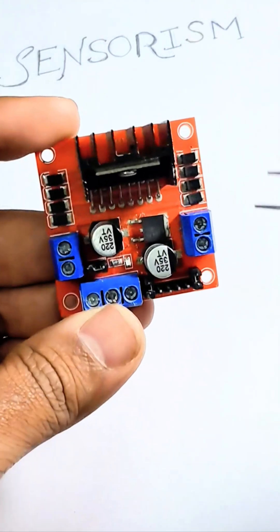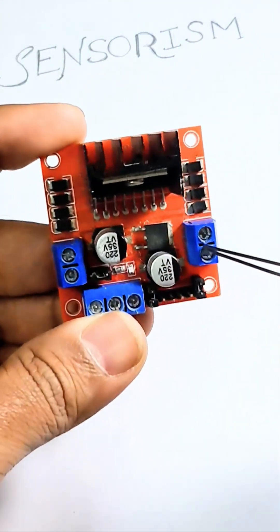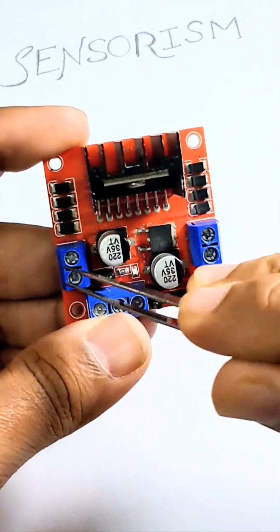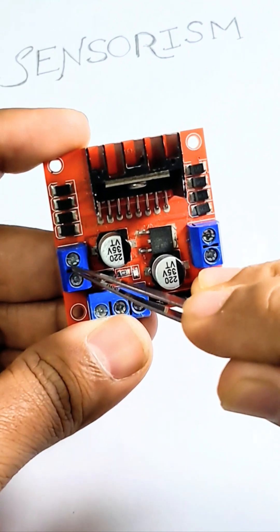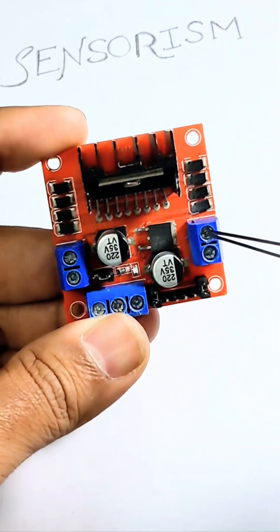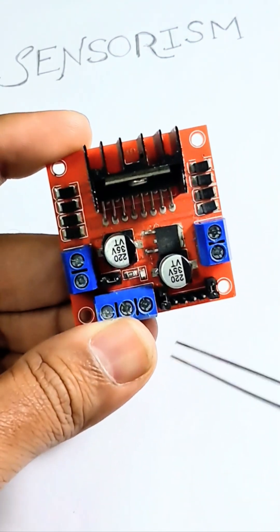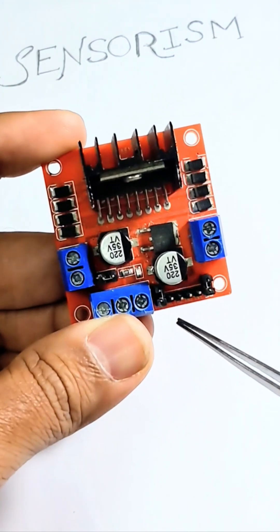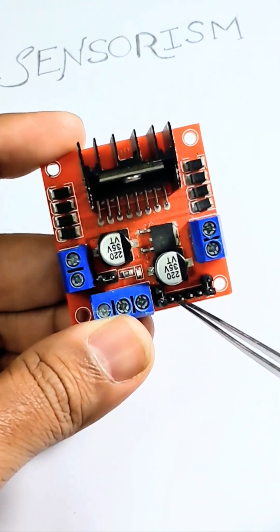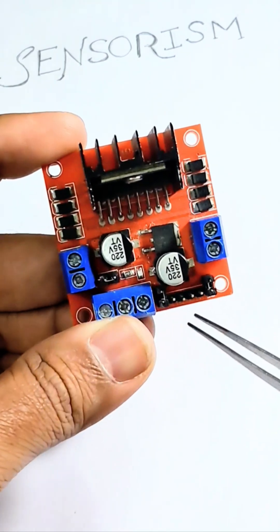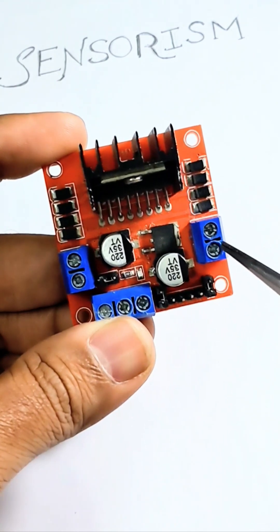So let's see the input and output. These are the two output terminals, one for each motor. One motor can be connected here and the other motor here. It has four input pins and can control the motor bi-directionally. These two pins determine the direction of this motor, and these two pins determine the direction of this motor.